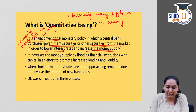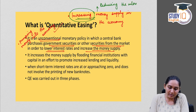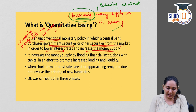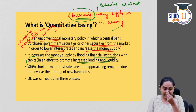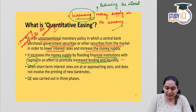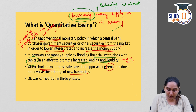The central bank pumps money into the economy in order to lower interest rates and increase the money supply. Money supply in an economy can be increased by reducing interest rates. Quantitative easing increases money supply by flooding financial institutions with capital, promoting increased liquidity and lending capacity of commercial banks. This is used when short-term interest rates are at or approaching zero, and it does not involve printing new bank notes. Quantitative easing was carried out in three phases.